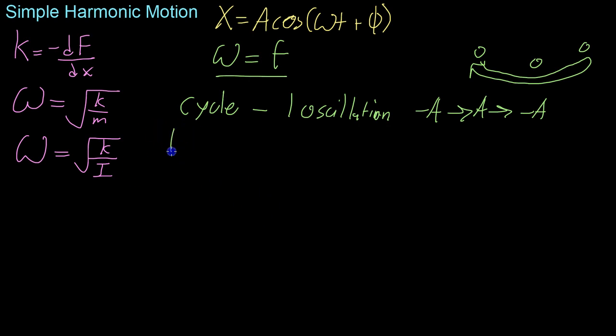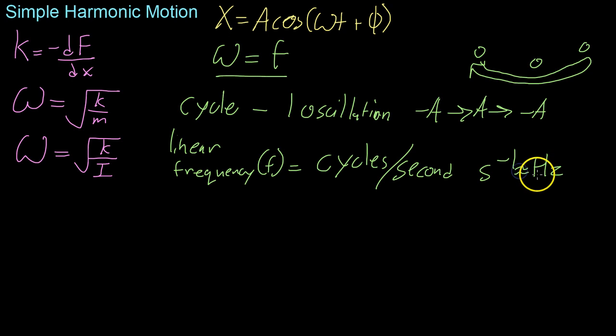Now, the linear frequency, which is usually represented by the letter F, is the number of cycles per second. And this is usually represented by S to the negative one or hertz are the units typically used for frequency.